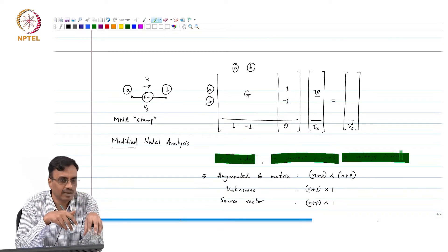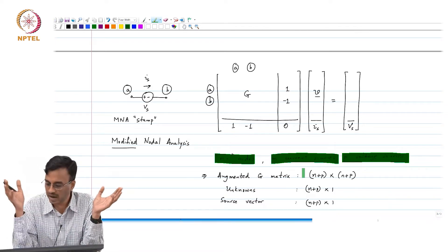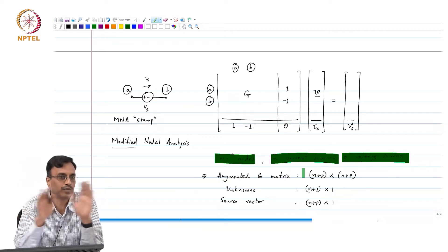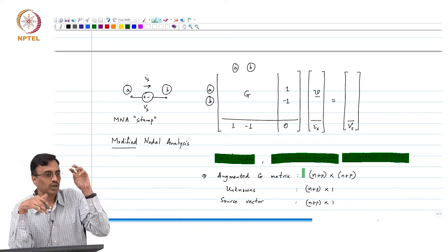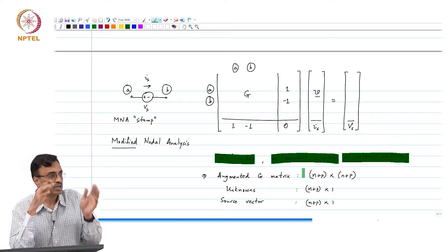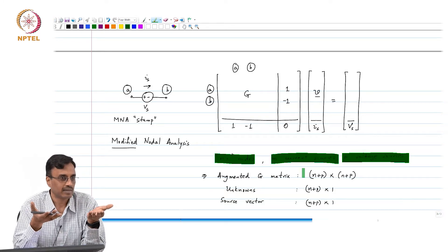If you see a conductance, you add to this matrix. First initialize the n plus p cross n plus p matrix full of zeros. Then you go element by element, you know the stamp of each element, you just add that stamp to the existing matrix.